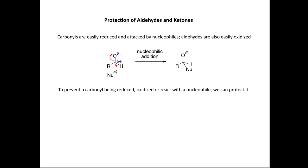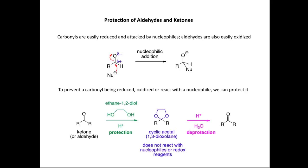To prevent your Aldehyde or Ketone being reduced, oxidized, or from reacting with a Nucleophile, we can protect it. The classic way of protecting an Aldehyde or Ketone is to convert it into an Acetal. In this example, we're reacting a Ketone with Ethane-1,2-Diol, a common readily available diol, with an Acid Catalyst to convert it into a Cyclic Acetal. This five-membered ring is called a 1,3-Dioxalane. Importantly, this Cyclic Acetal does not react with Nucleophiles or Redox Reagents, so it's much less reactive than the starting Ketone. To get the Ketone back from the Cyclic Acetal, all I have to do is react it with Acid and Water, and I recover my starting Ketone.